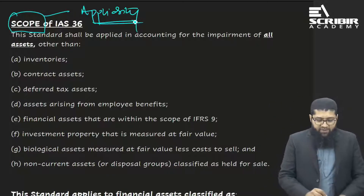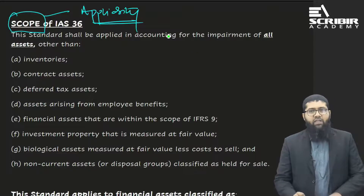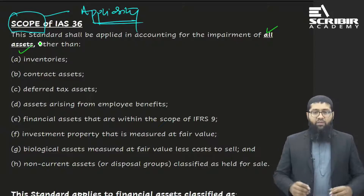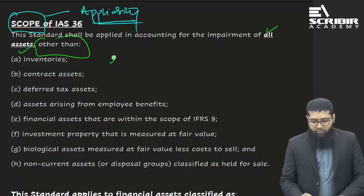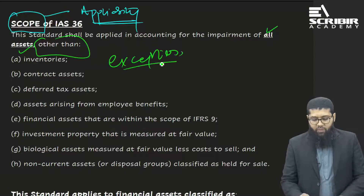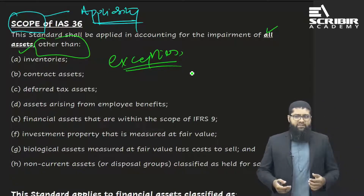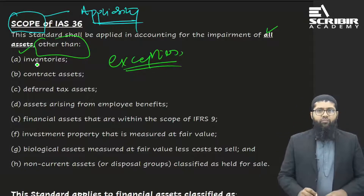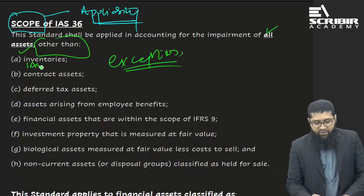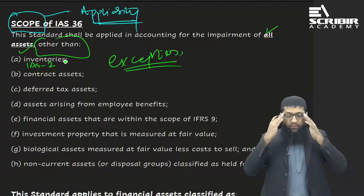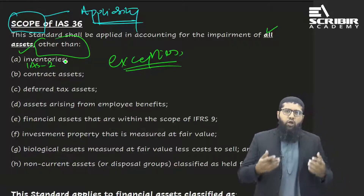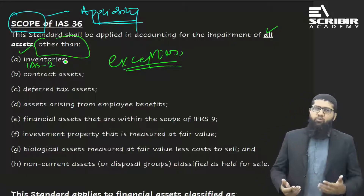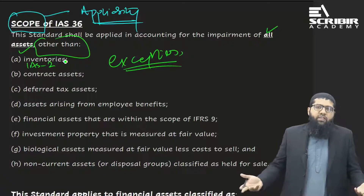IAS 36 shall be applied in accounting for the impairment of all assets, other than the following exceptions. Number one is inventories — under IAS 2 we already carry inventories at the lower of cost or NRV. So when you are already carrying inventories at the lower of cost or NRV, you don't need to measure them under IAS 36 because they are already impaired.